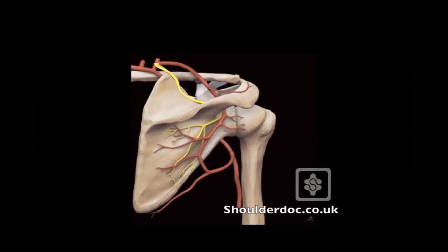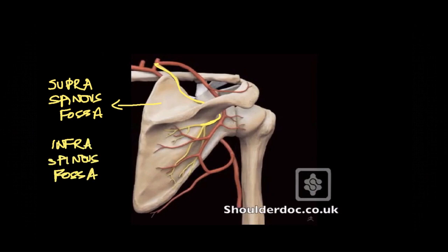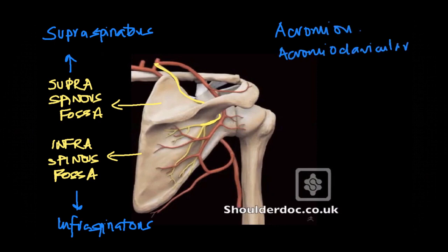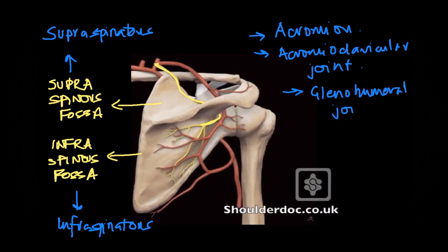Let's have a look at the fossa from the posterior side. The spine of the scapula divides the scapular area into two fossae: the supraspinous fossa lying above the spine, and the infraspinous fossa lying below the spine. As the suprascapular nerve enters the supraspinous fossa under the supraspinous muscle, it supplies that muscle, then hooks around the spine of the scapula at the spinal glenoid notch to enter the infraspinous fossa, supplying the infraspinous muscle. Altogether, the suprascapular nerve gives innervation to the acromion, the acromioclavicular joint, and the glenohumeral joint.